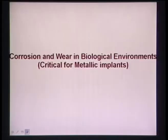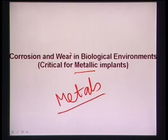Next: corrosion and wear of materials in biological environments. Corrosion and wear are properties important mostly for metallic materials, since metals are largely prone to corrosion in simulated body fluid environments. Wear is defined as progressive material damage at two surfaces in relative motion. This is critical for metallic implants like stainless steel and titanium.